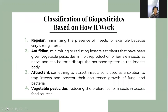Classification of biopesticides based on how they work: Number one, repellent — minimizing the presence of insects due to a very strong scent. Number four, vegetable pesticides — reducing the preference of insects and their access to food sources.